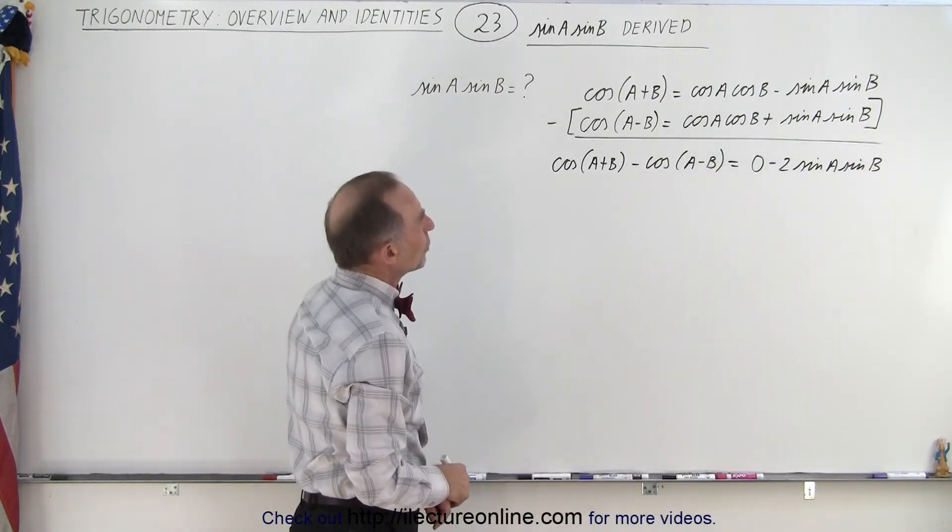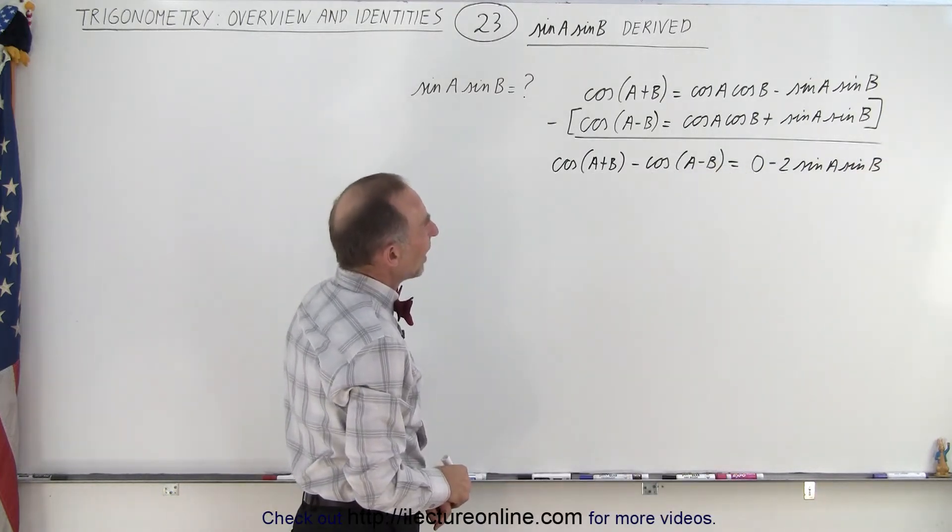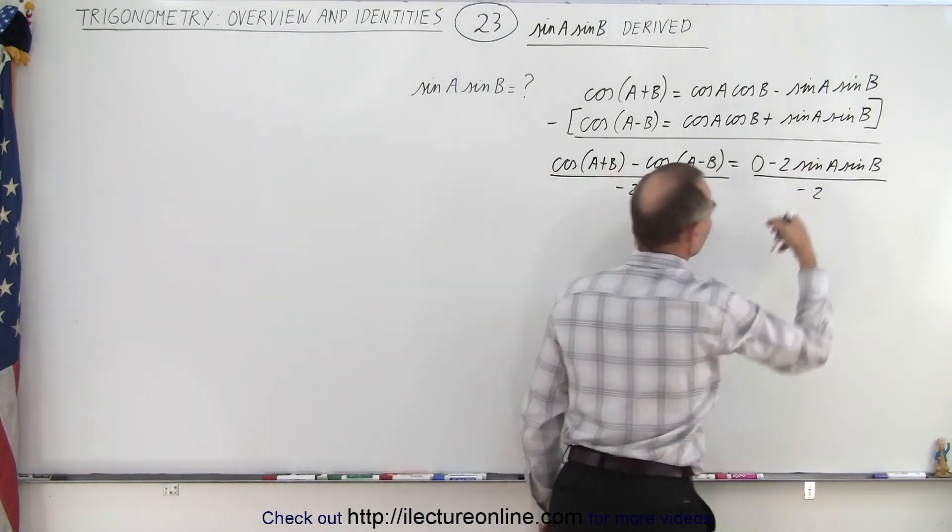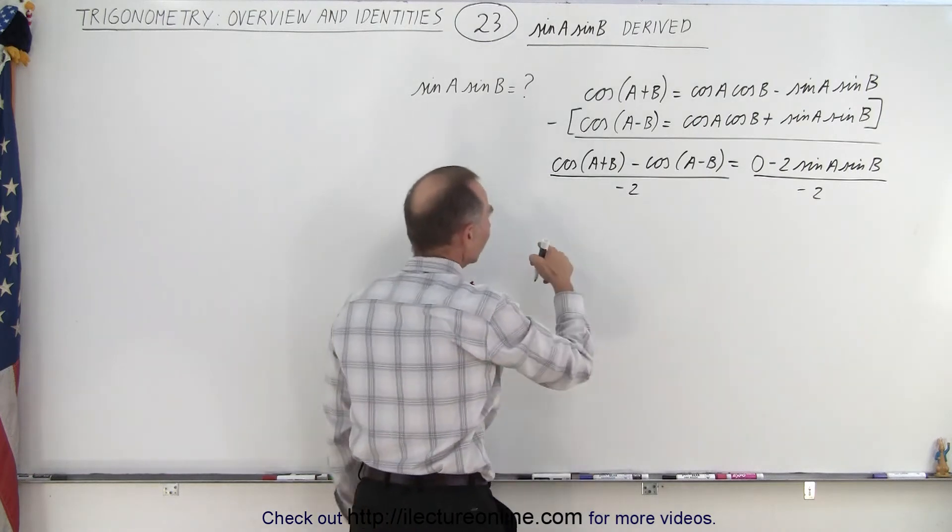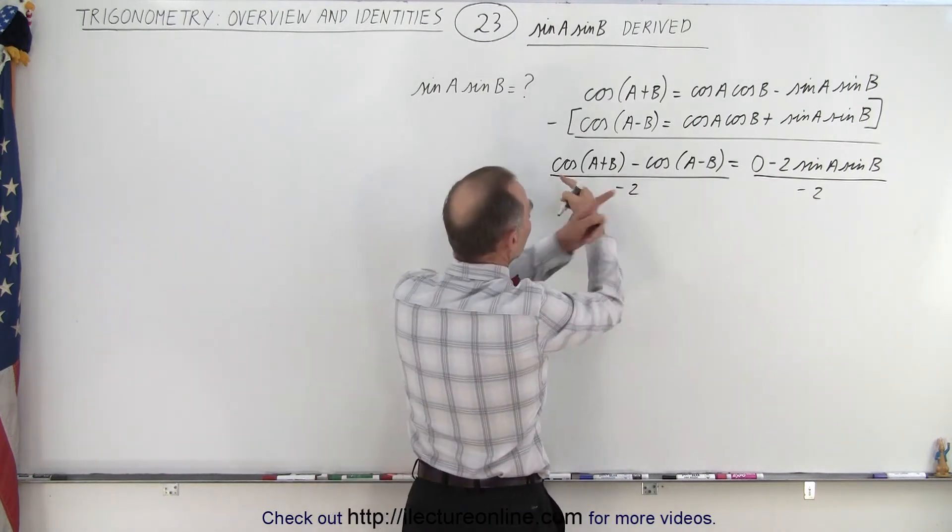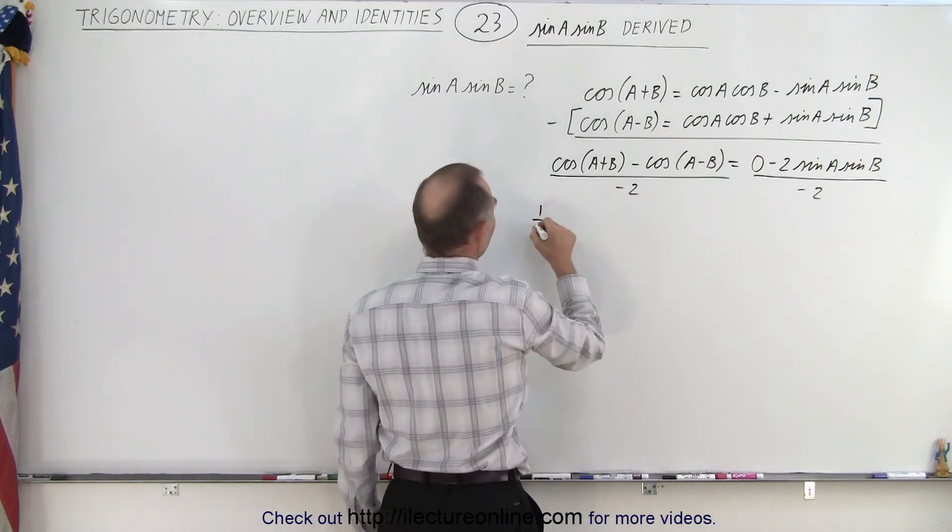So now we're going to divide both sides by negative two. The negative twos cancel out there. On the left side, we end up with a negative. We can get rid of the negative by switching those two terms around, so we end up with one half times